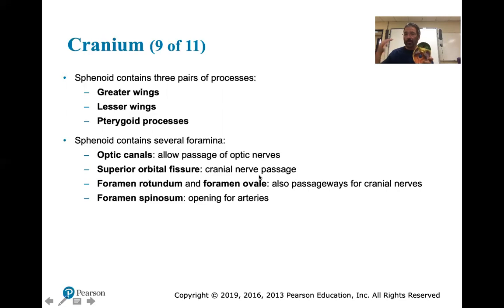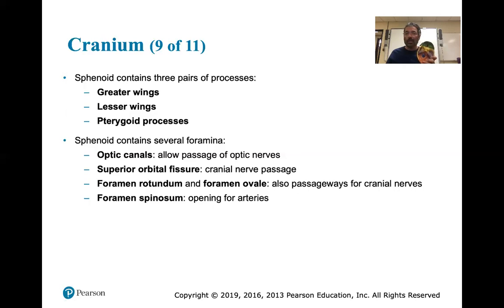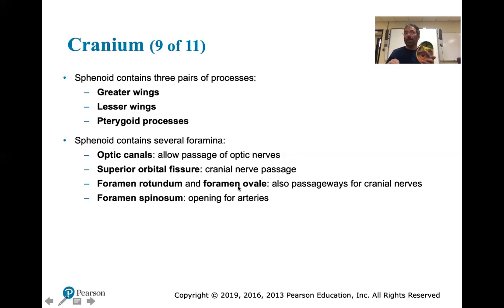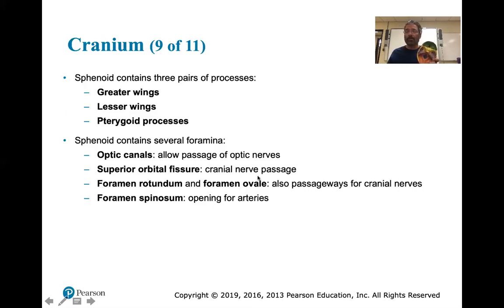The superior orbital fissure is a cranial nerve passage - I put the pipe cleaner through that earlier. Foramen rotundum and foramen ovale also pass cranial nerves. When we study the heart, there's also a foramen ovale in embryology between the right and left atria. In the fetus, blood passes through there since the fetal lungs aren't working. It should seal at birth; a patent foramen ovale means the child is born with that hole. This term reappears when studying the atrial septum of the heart.